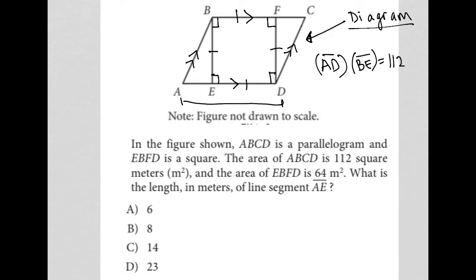And the area of EBFD, the square in the middle, is 64. That is useful because I know that I find the area of a square by multiplying base times height or side times side. All the sides are equal, so it doesn't really matter. So I know that if the area here is 64, that means that each of these sides must be 8.